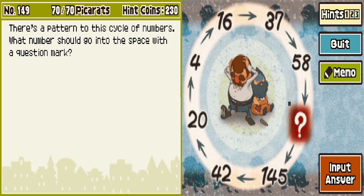4 plus 12 is 16, and then plus 21 is 37. But 37 plus 21 is 58.